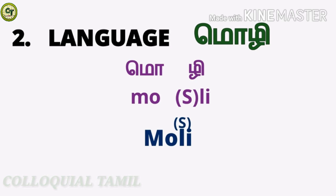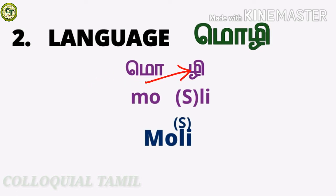Our second word is 'moLi', which means 'language.' This is 'மொ', a short sound letter. This is 'ழி' — also a short sound letter. Notice the capital L: this 'ழி' should be pronounced with the special L sound. One more time, the word is 'moLi'.